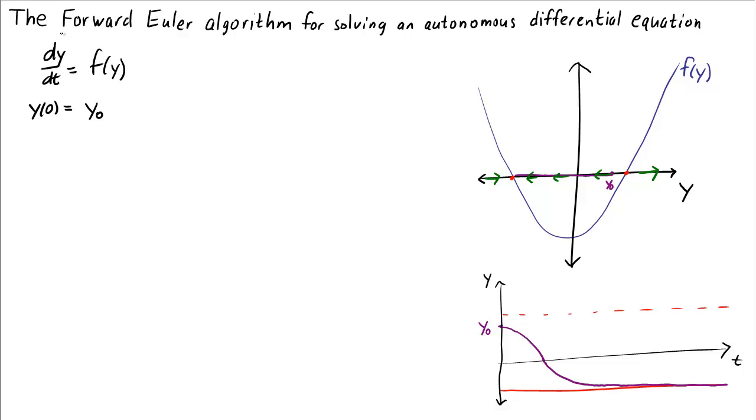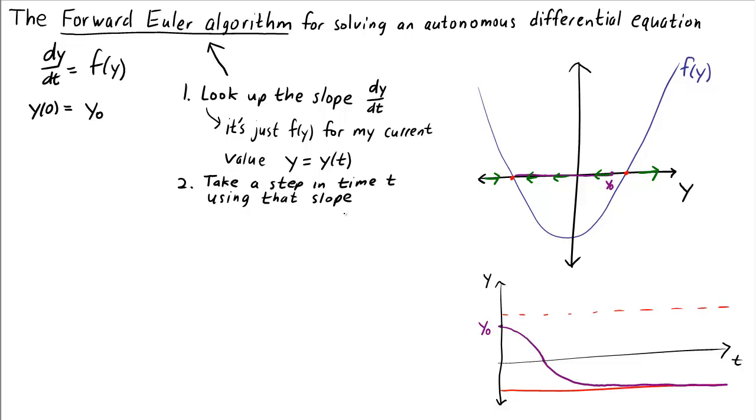We can do this more precisely by using an algorithm called the forward Euler algorithm. For the forward Euler algorithm, all we do is: one, we look up the slope dy/dt. And the way we look up the slope is to look at the differential equation, and see that dy/dt is f(y), for my current value y, which is y(t). And then we just take a step in time t, using that slope that we just determined. And then we repeat that process.